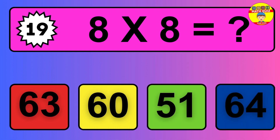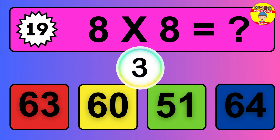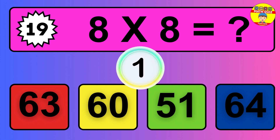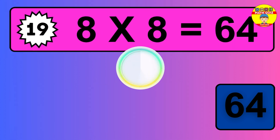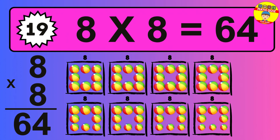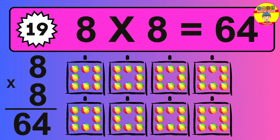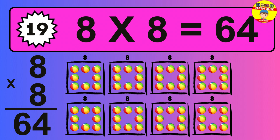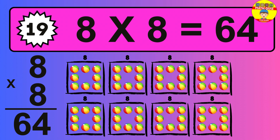Question 19. 8 times 8 equals what? So the answer is 8 times 8 is 64. To calculate, we have 8 groups with 8 balls each one. So how many balls do we have? 64 balls.